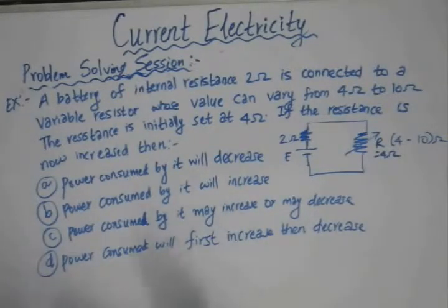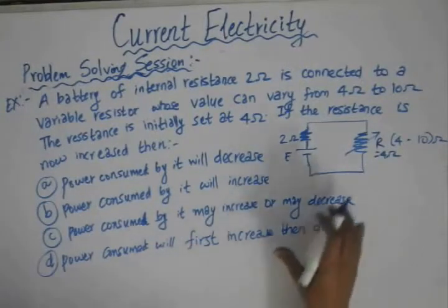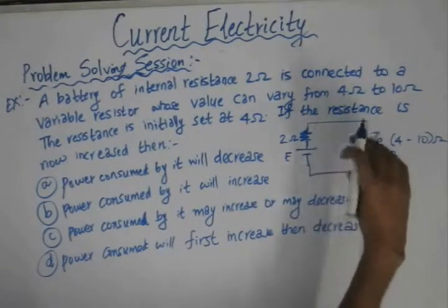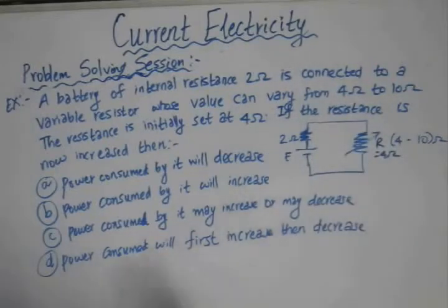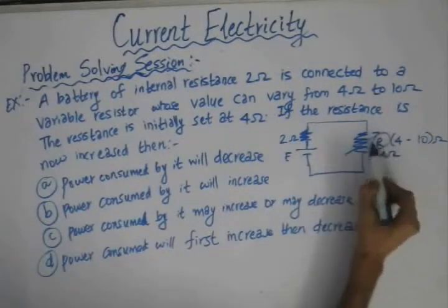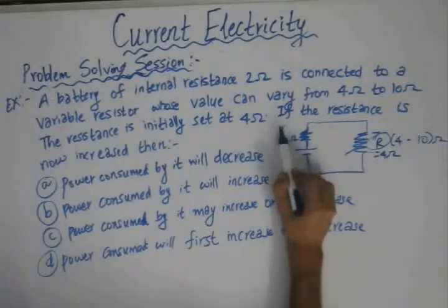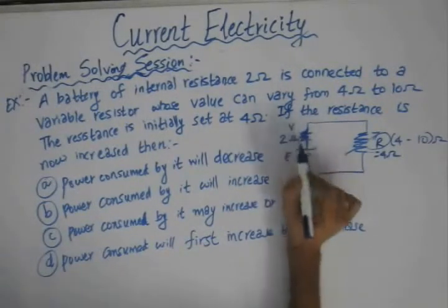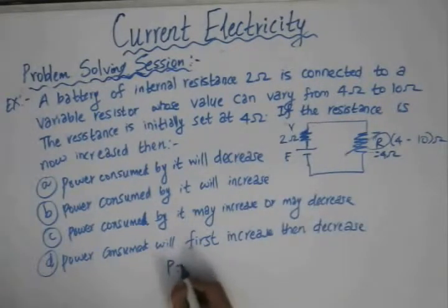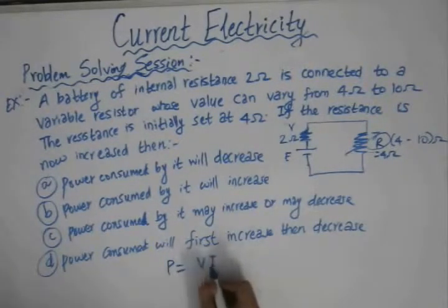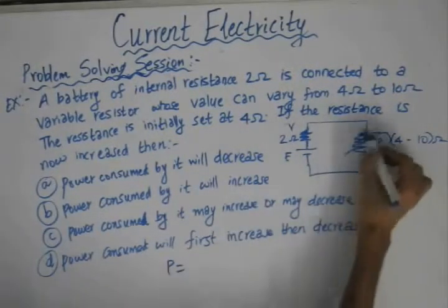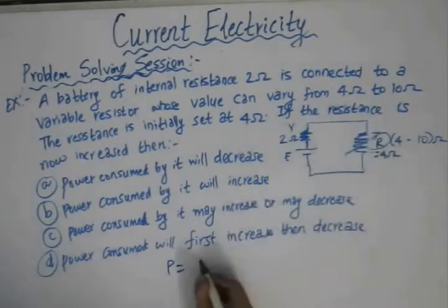In order to solve this, first let us redo the derivation for the maximum power that can be transferred to a resistance when the maximum power is transferred to an external resistance R. If we consider the external resistance as capital R and the internal resistance as small r, the expression for power delivered to the load is I squared times R, where I is the current flowing through the circuit.